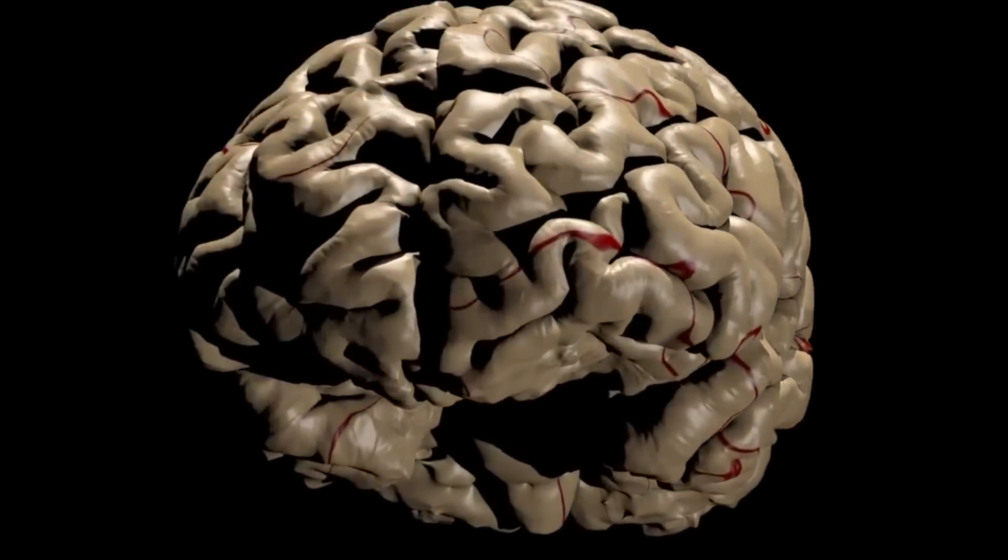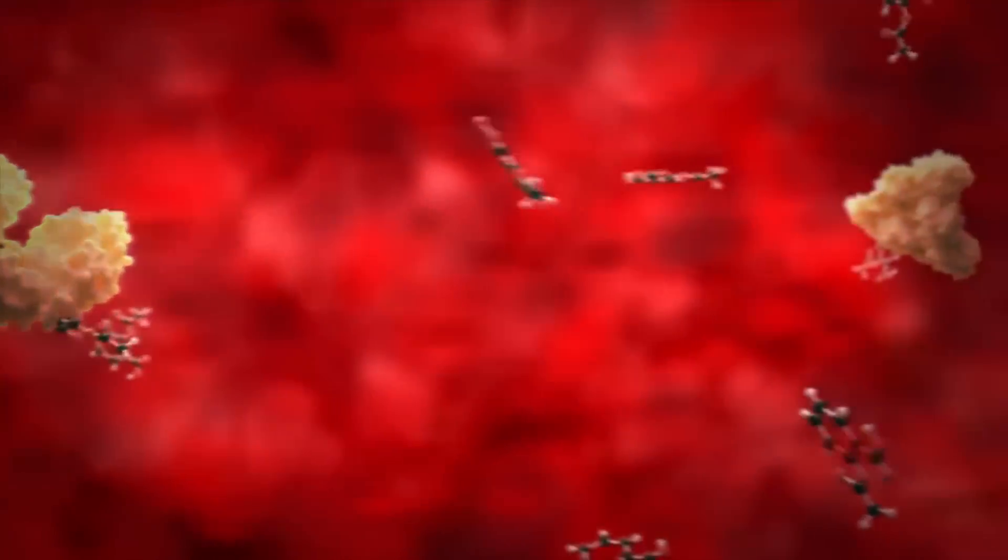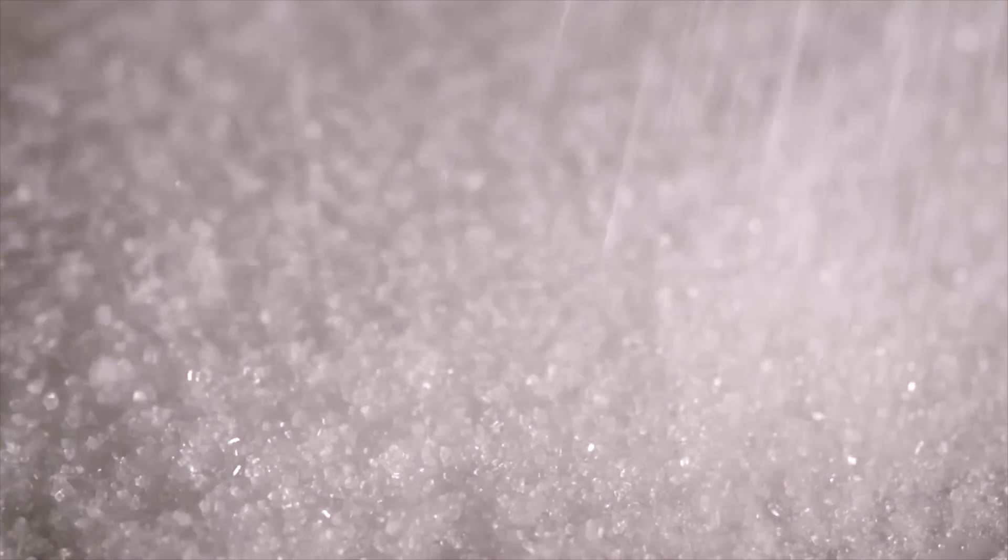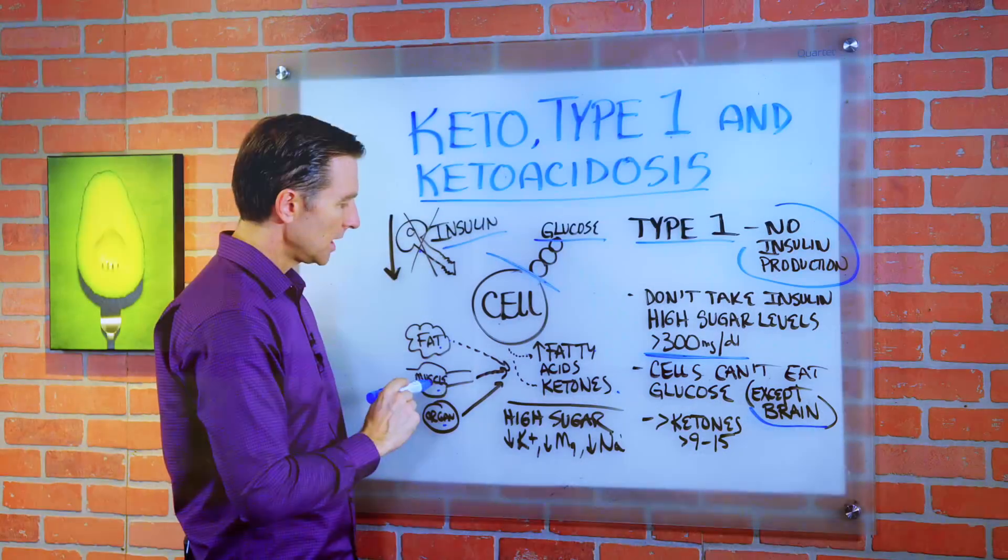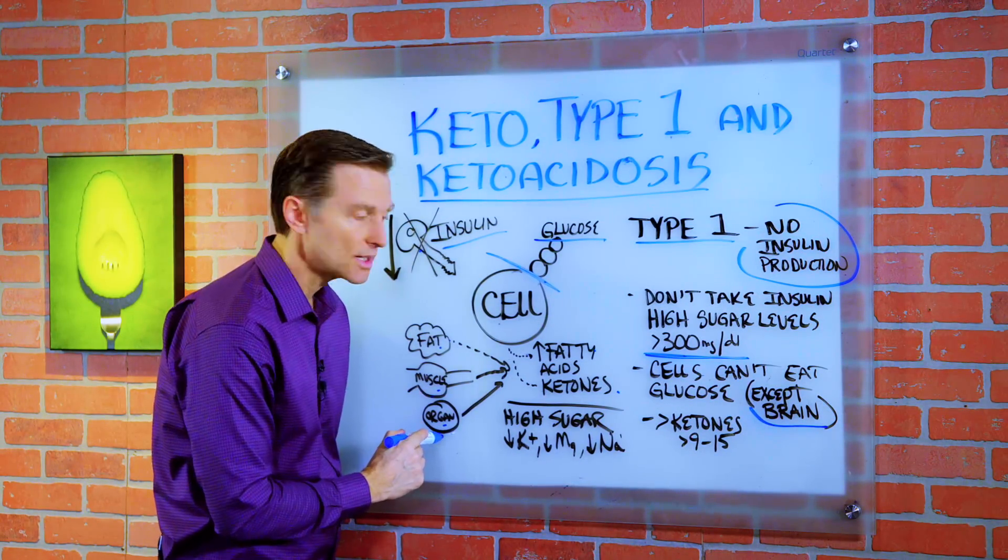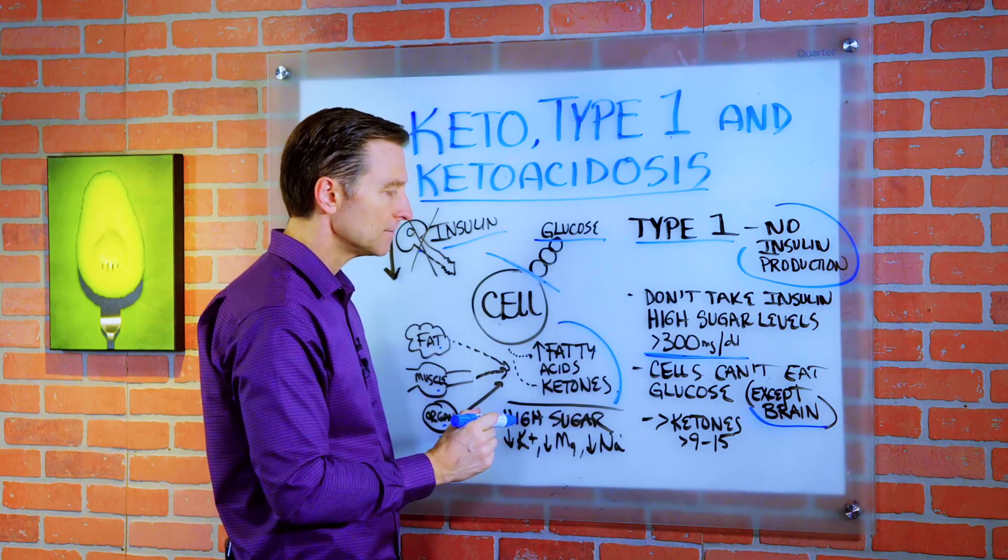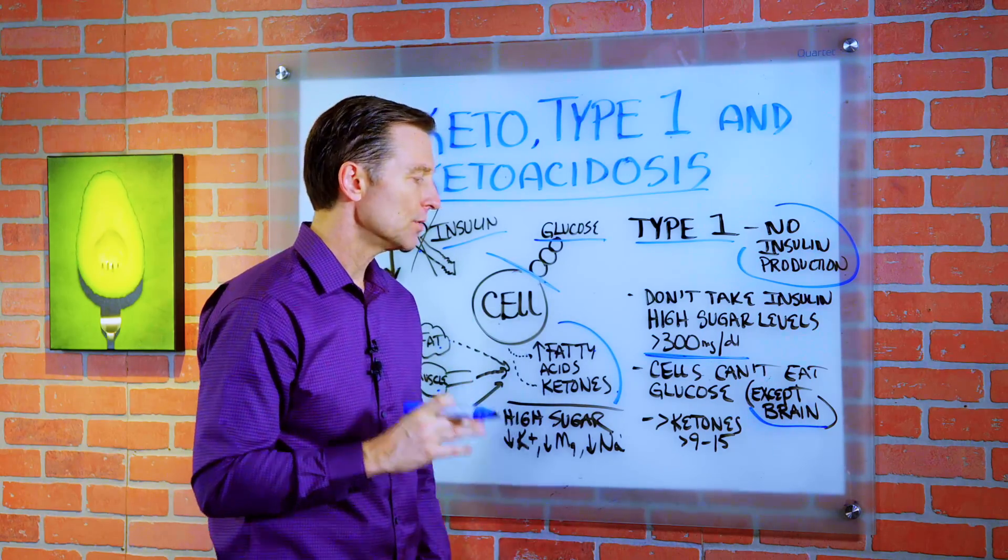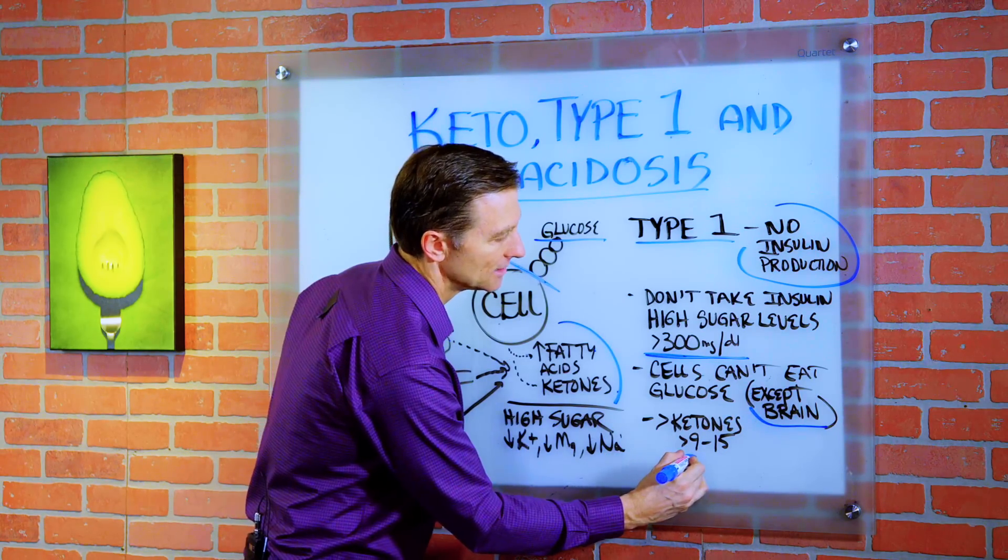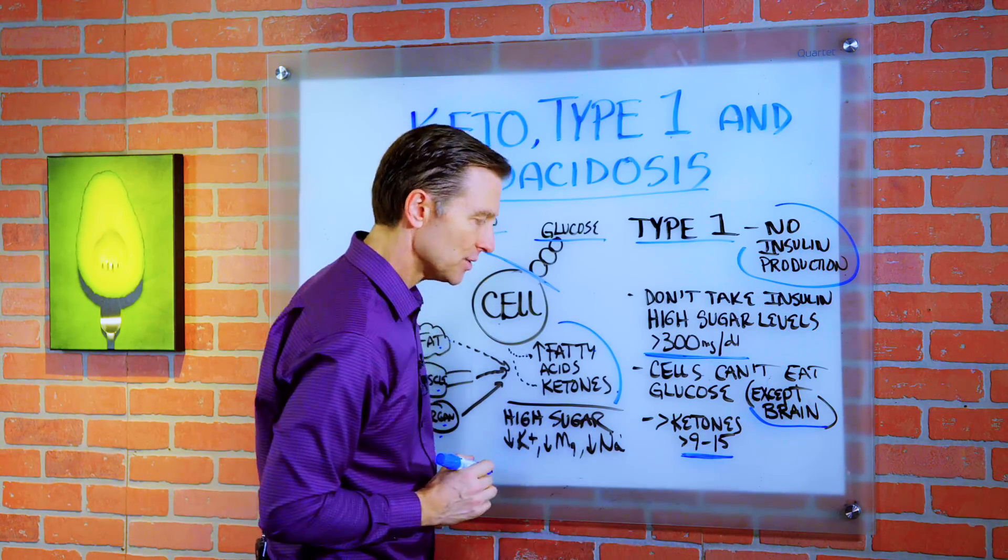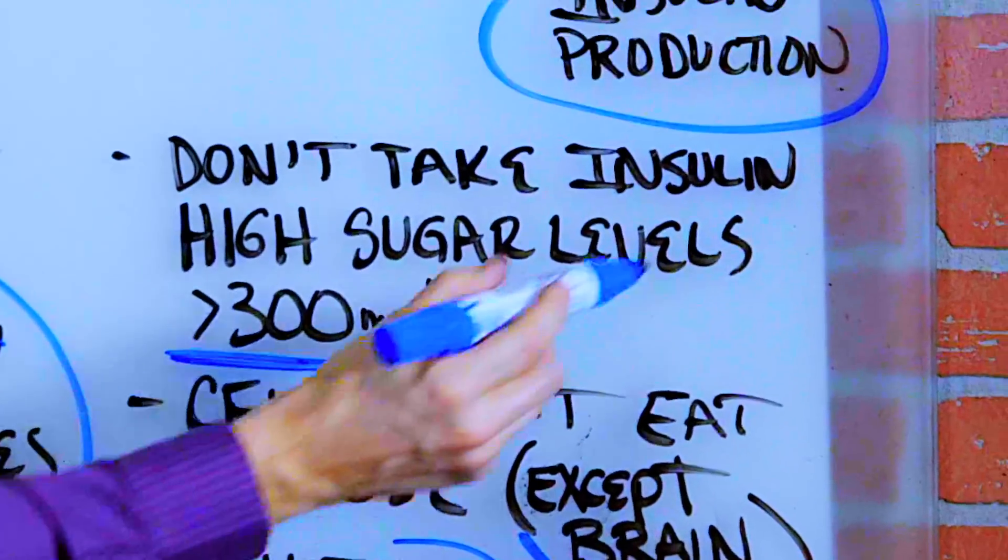So mentally, you might feel fine, but there's a lot of other problems happening with the body. Now, what the body will do, if you can't use glucose, your body is going to break down fat and the fatty acids and ketones, same thing with muscle and even organs. It's going to start breaking these down to deliver some fuel to such a degree that potentially your ketones can get very, very high. So if they're over nine up to like 15, that can be very dangerous.